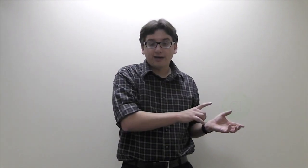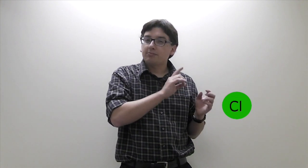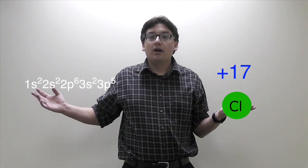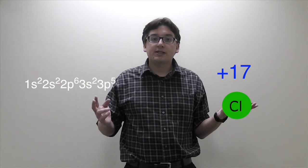Let's have a look at chlorine for a second. Chlorine is +17 because it has its atomic number 17, 17 protons. And here's chlorine's electron configuration: 1s² 2s² 2p⁶ 3s² 3p⁵.